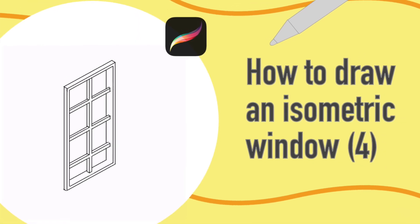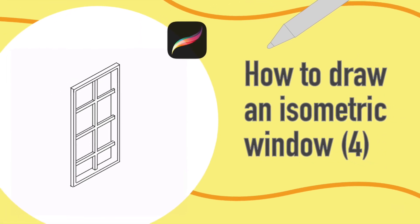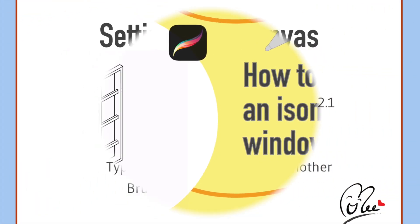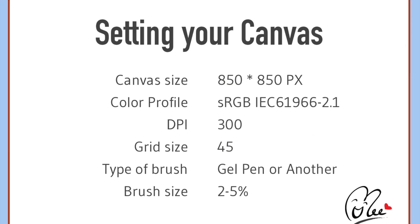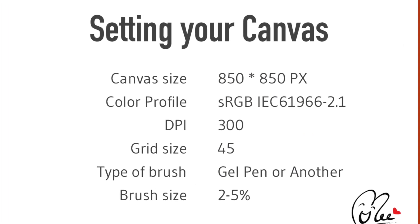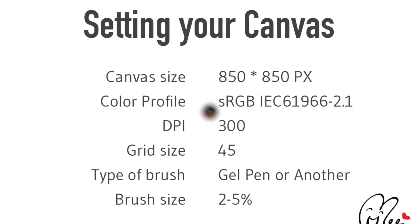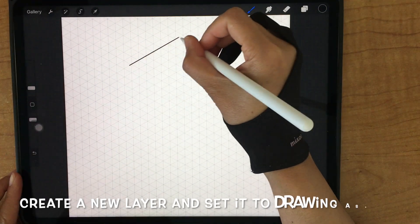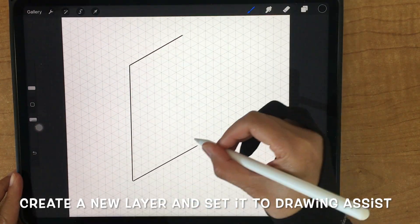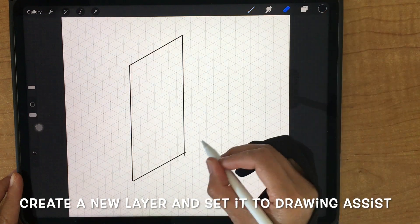How to draw an isometric window. First, setting your canvas. Create a new layer and set it to drawing axis.